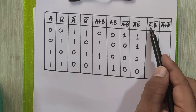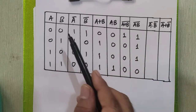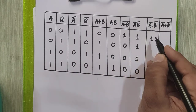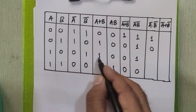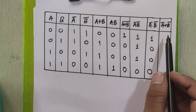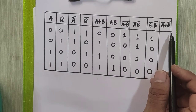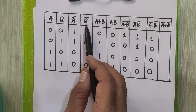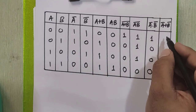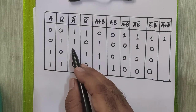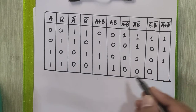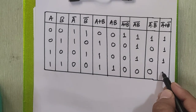Then find A complement into B complement by multiplying those two columns: 1 into 1 is 1, 1 into 0 is 0, 0 into 1 is 0, 0 into 0 is 0. The last column is A complement plus B complement — adding those two columns: 1 plus 1 is 1, 1 plus 0 is 1, 0 plus 1 is 1, 0 plus 0 is 0.